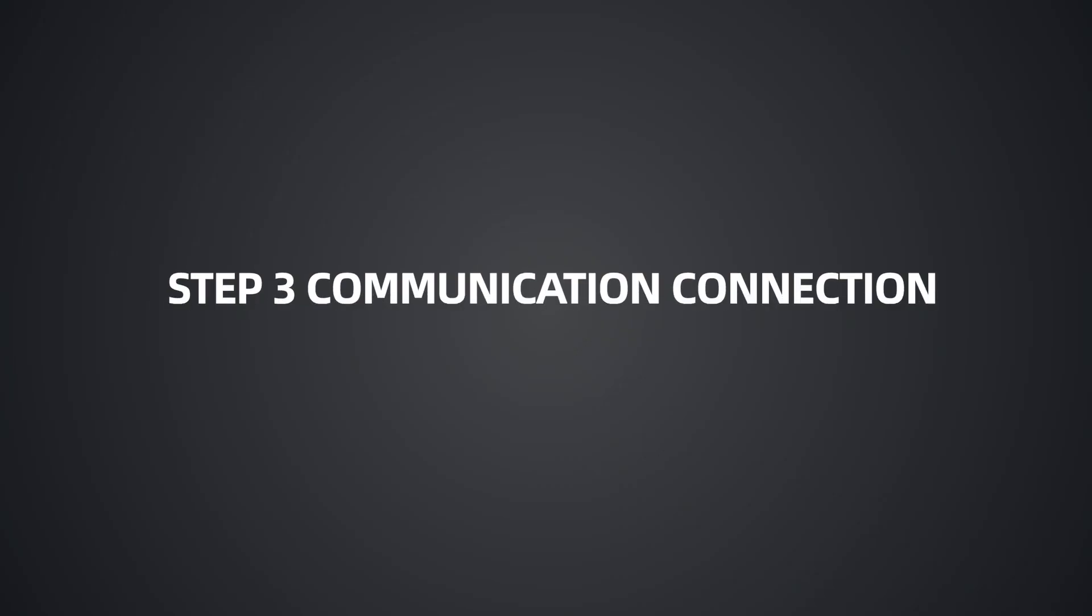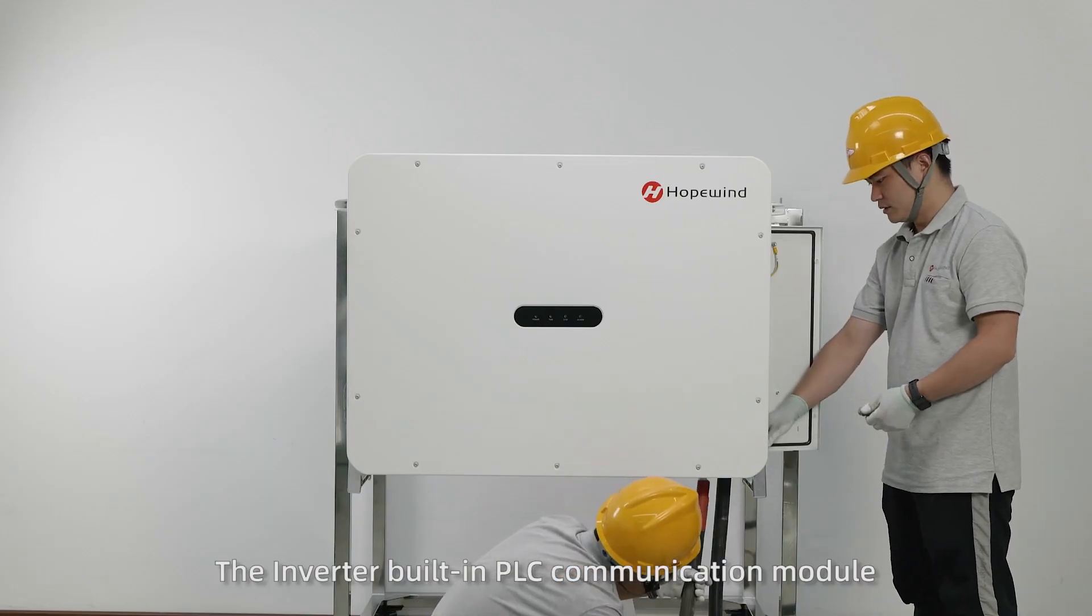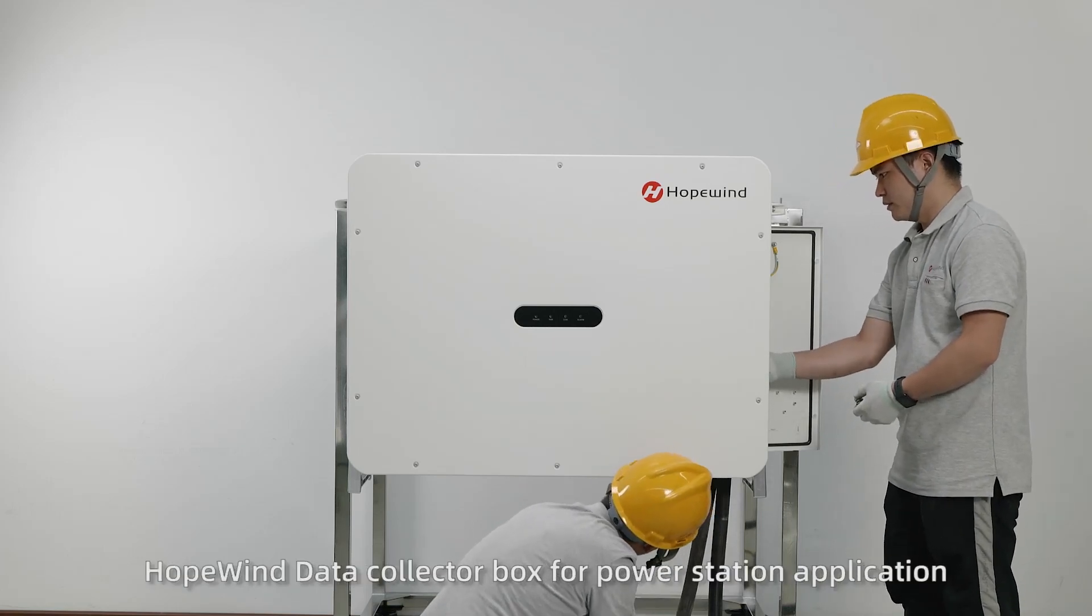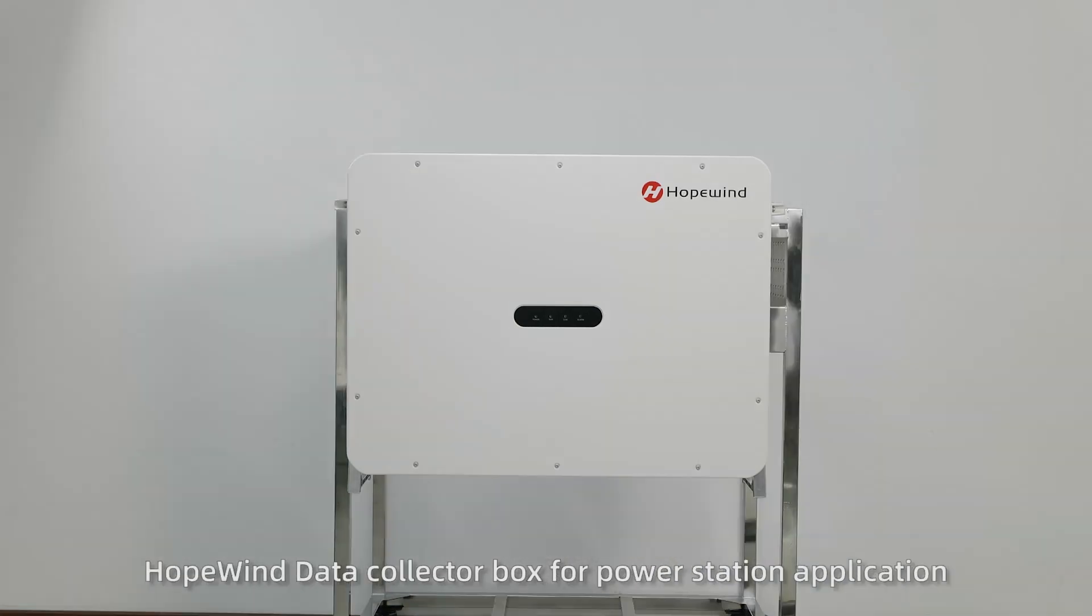Step 3: Communication Connection. The inverter has a built-in PLC communication module. This function needs to be used in conjunction with Hopewind data collector box for power station application, which can realize the data transmission function after the completion of connection and address setting.